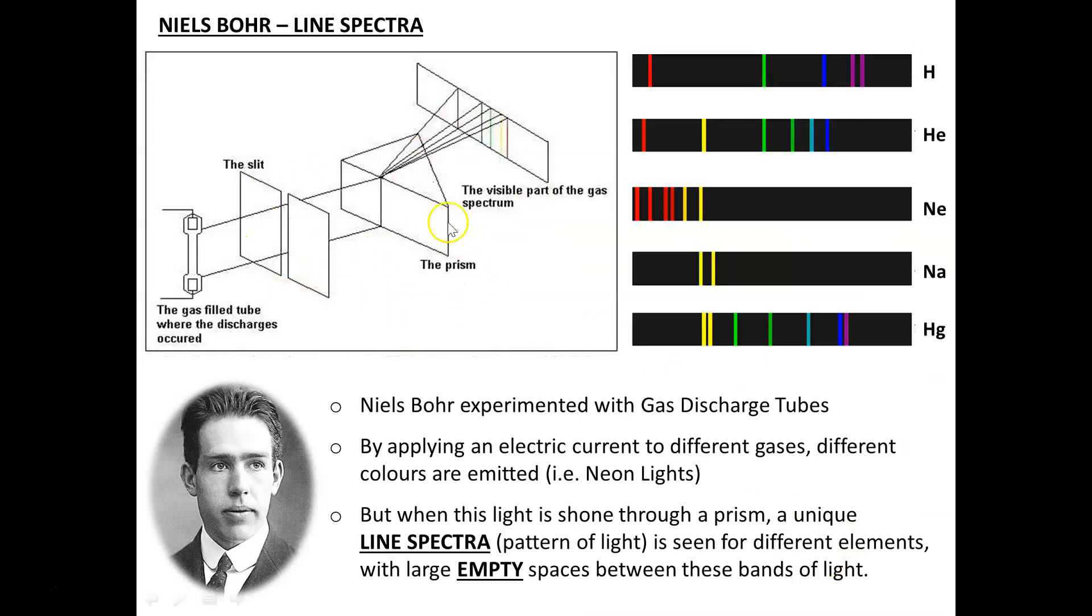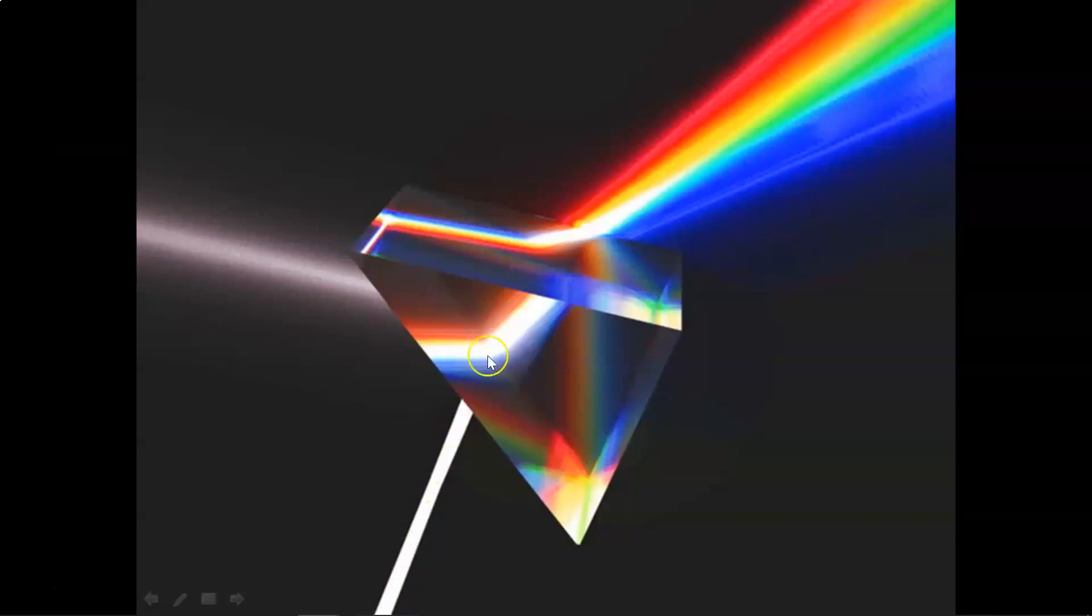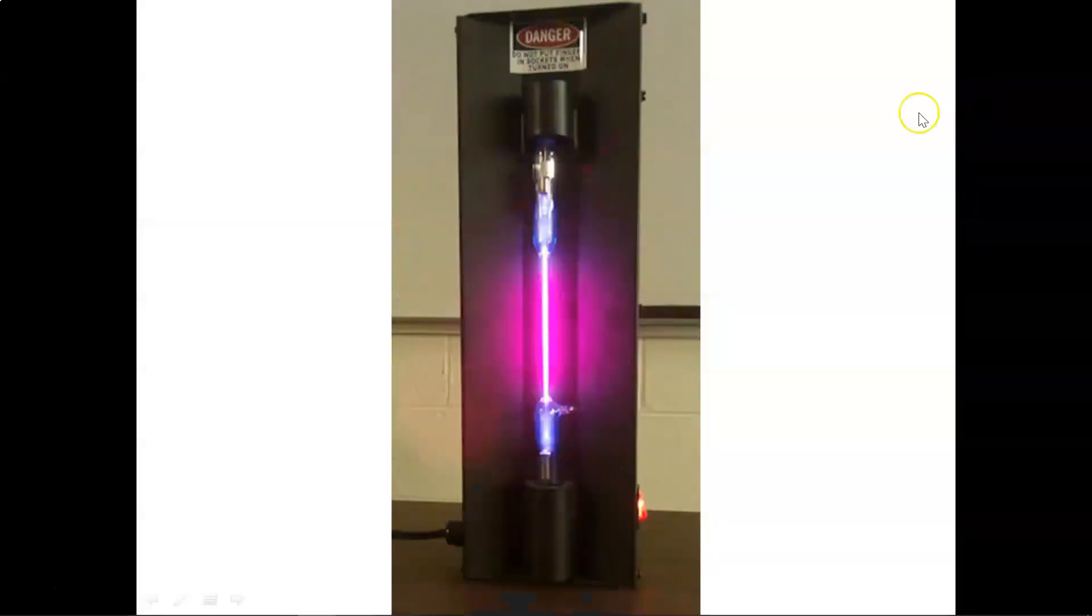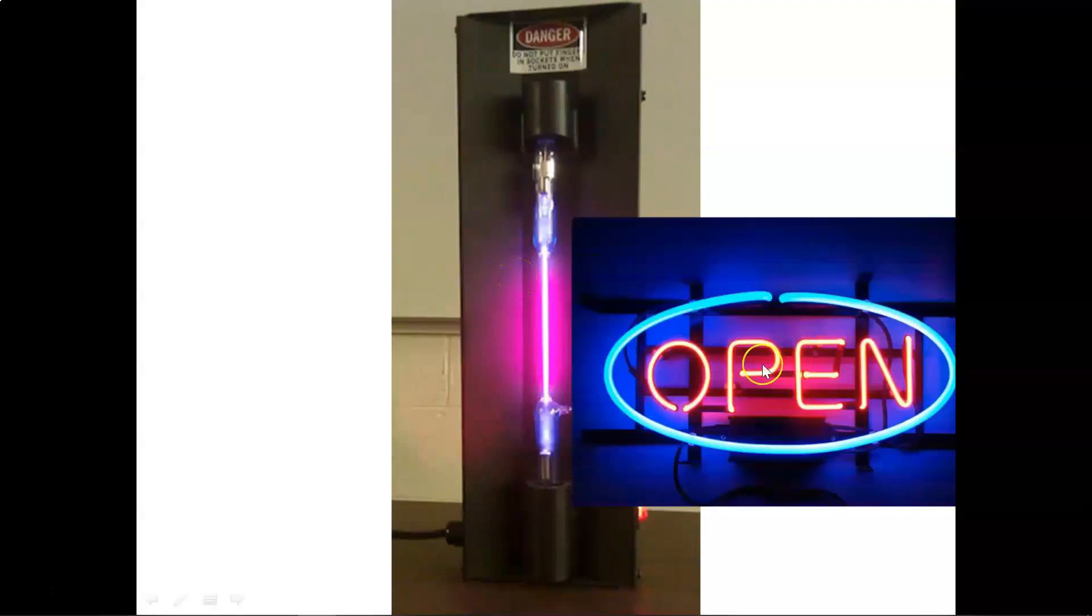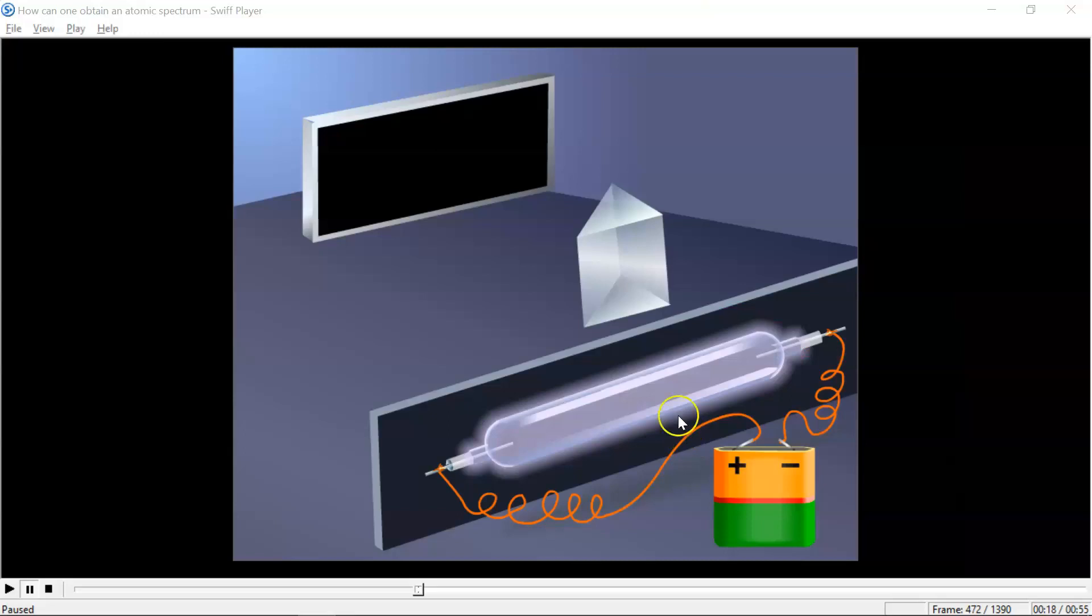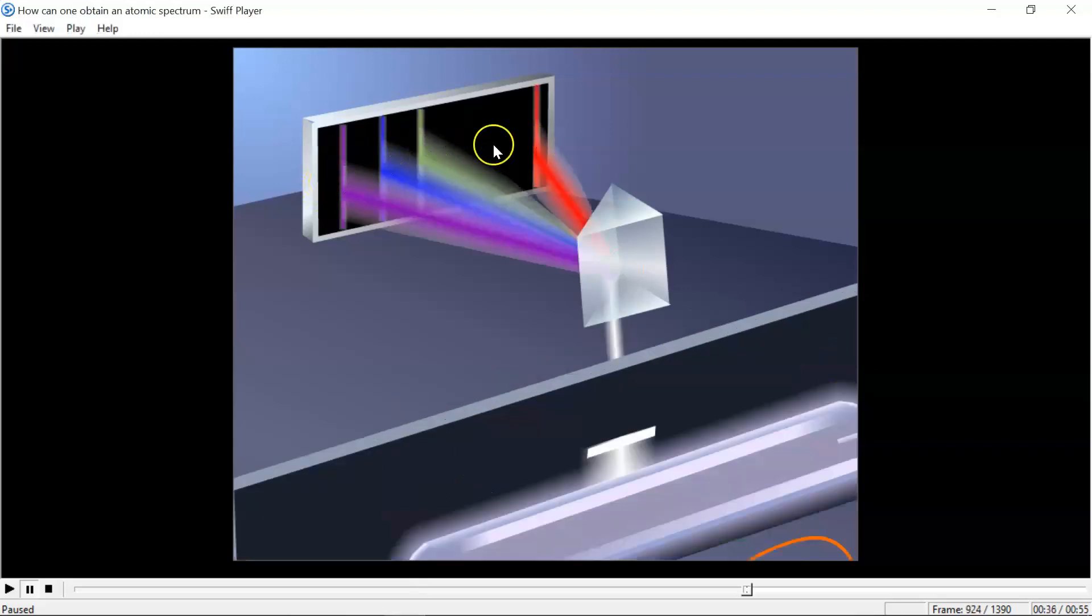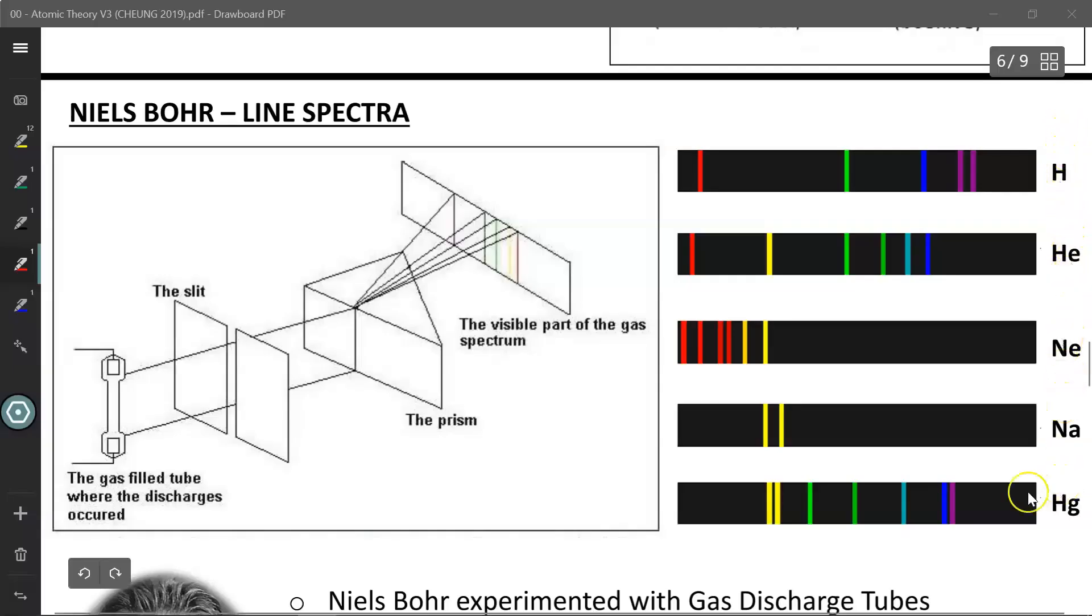This experiment brings us to our modern quantum interpretation of the atom. When we shine a white light through a prism, we get a rainbow effect. But what if we don't use a white light? This is called a gas discharge tube. Essentially, we put hydrogen gas inside a tube that's been vacuumed out so there's no other gas inside except for hydrogen, and then we apply an electrical voltage to it. When you apply electrical voltage to it, the hydrogen begins to glow. We use this technology with neon signs, where different gases emit different colors of light. If we take these gases and apply an electrical voltage to them and shine their light through a prism, instead of a continuous spectrum, we see distinct color bands appear. And each type of gas has its own unique line spectra, or pattern of visible light.